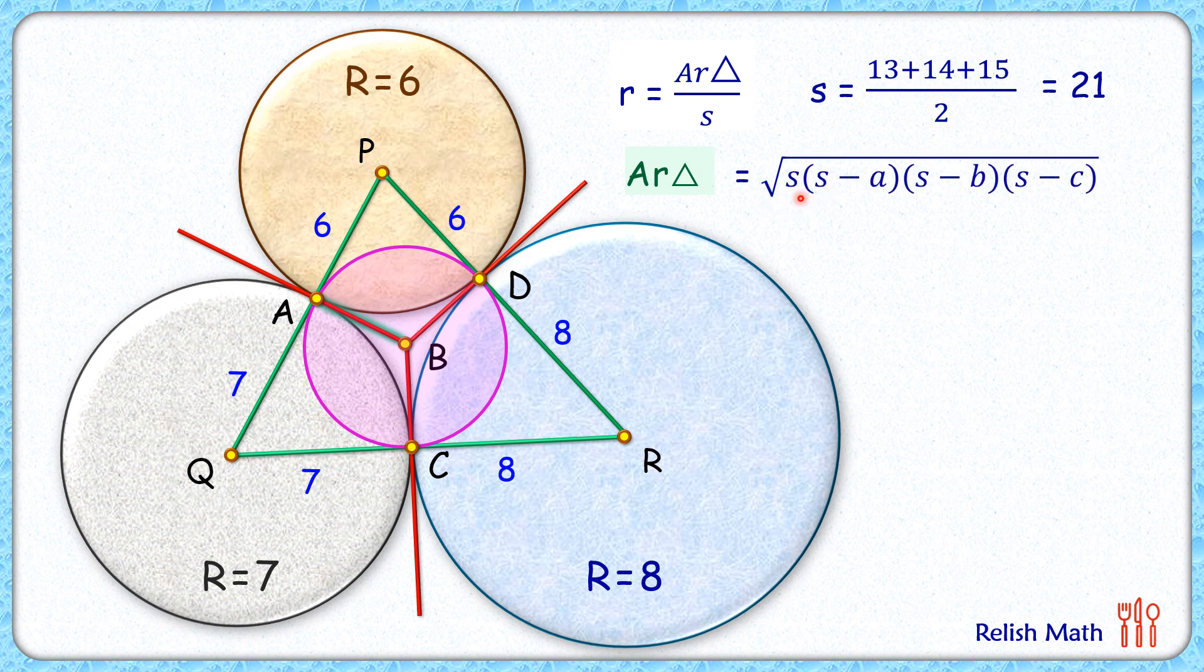That is square root of s(s-a)(s-b)(s-c), where s is 21 and a, b, c are 13, 14, and 15. Simplifying and solving, we get the area of triangle PQR as 84 cm².